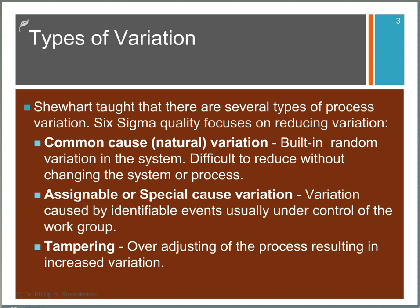The third type of variation is something often overlooked. It's called tampering. And this is over adjusting a process, which results in increased variation. Sometimes what is random variation in a process is treated by management as an assignable cause variation, and then they continue to make adjustments thinking that they're correcting the variation. In fact, what they're doing is adding variation to the system.